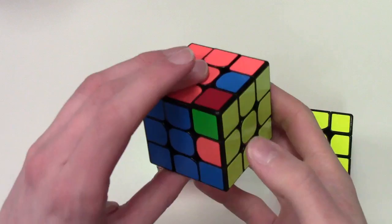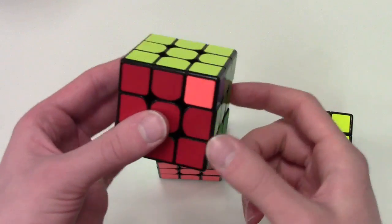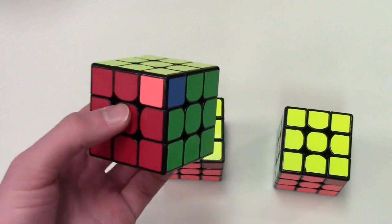Now the Y perm is likely the fastest diagonal swap PLL. This algorithm is a little longer than most, but it is quite fast.